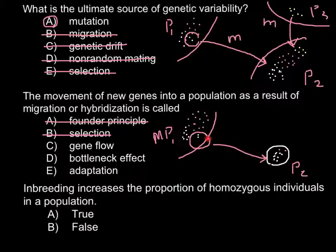Answer D, the bottleneck effect, occurs when some kind of disaster happens and the population is greatly reduced — sometimes only a few animals or plants remain, and these individuals start a new population. As you can understand, the genetic variability of such a population would be greatly reduced. This is called the bottleneck effect, so we cross out this answer as well.